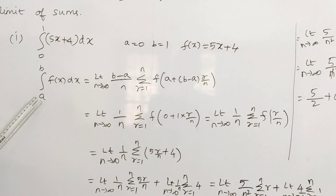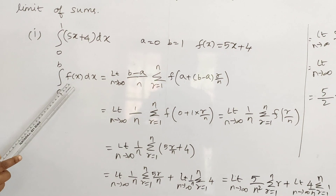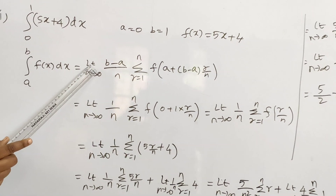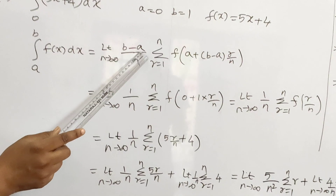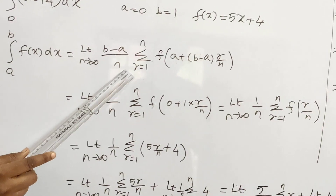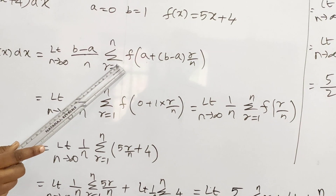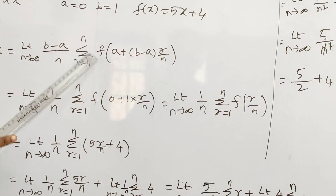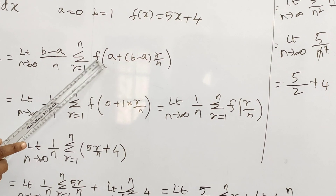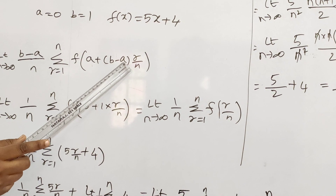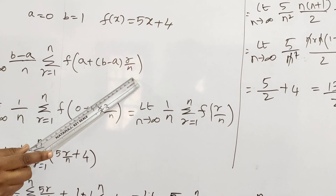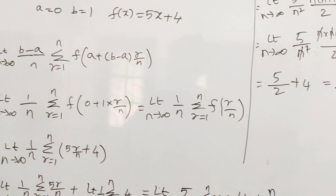So the formula for integral a to b of f of x dx is: limit n tends to infinity, b minus a by n, summation r equal to 1 to n, f of a plus (b minus a) into r by n.